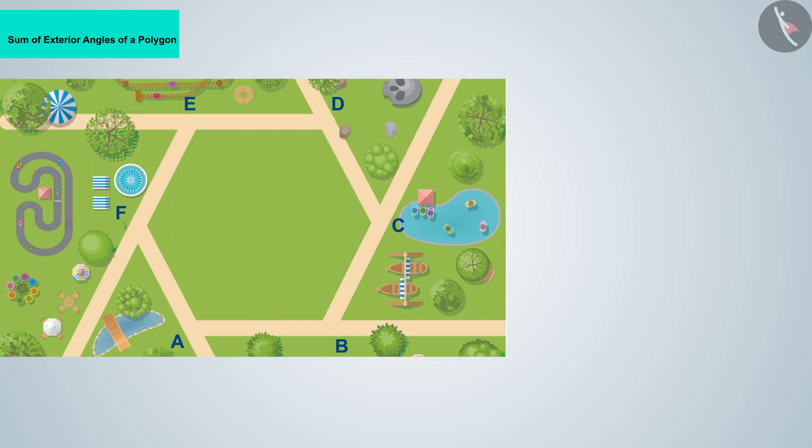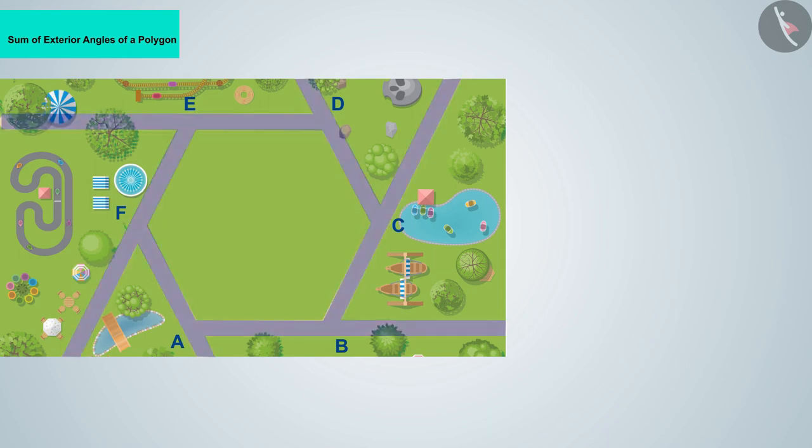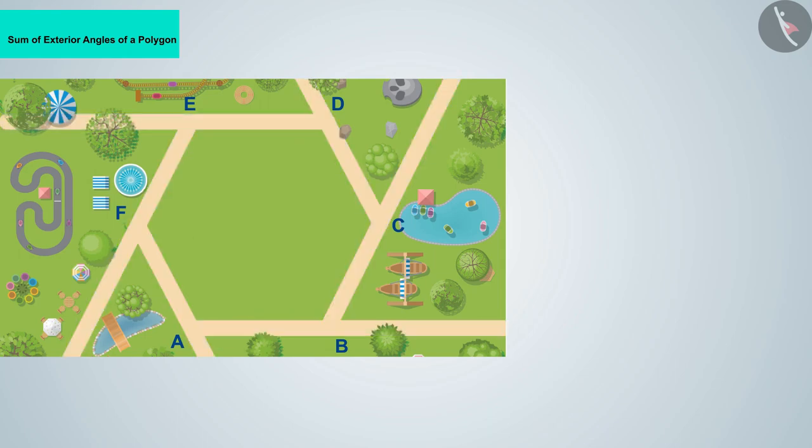Suppose you are in a hexagonal garden. You start from vertex A and move once in the anticlockwise direction along the boundary of the garden. You start with A and move in the direction of AB. As soon as you reach B, you rotate at angle one and move towards BC.